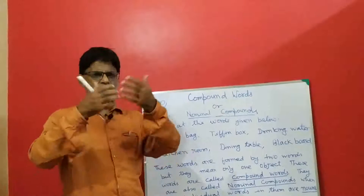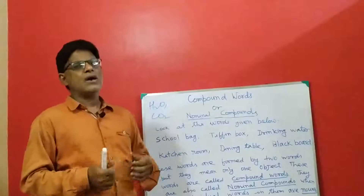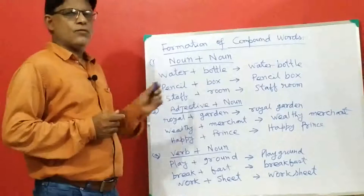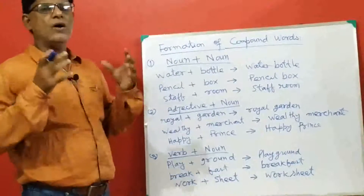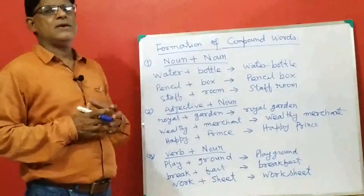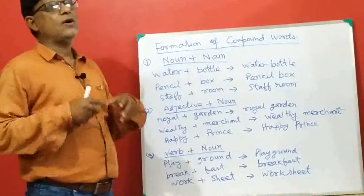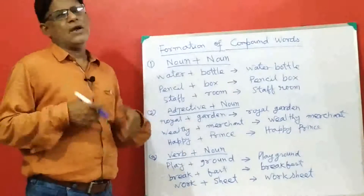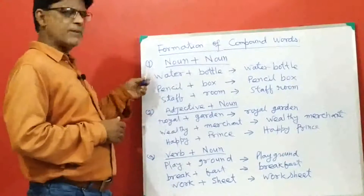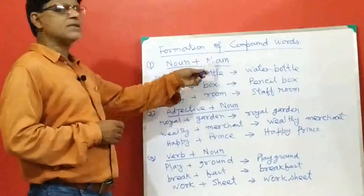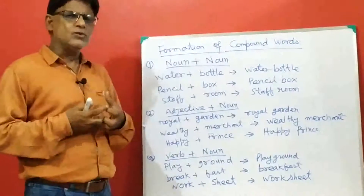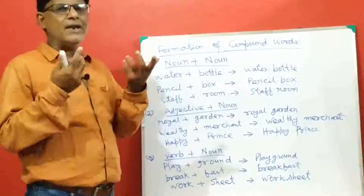Now I am going to show you how compound words are formed. Formation of compound words — how compound words are formed. Compound words are formed by joining two words. The two words may be noun and noun, verb and noun, adjective and noun, and so on.